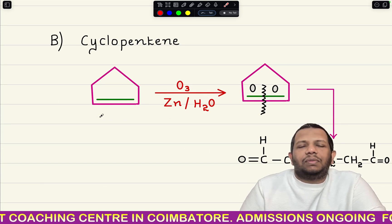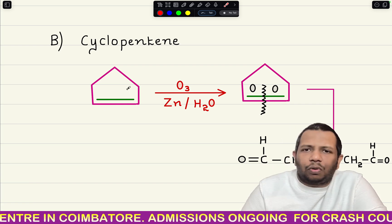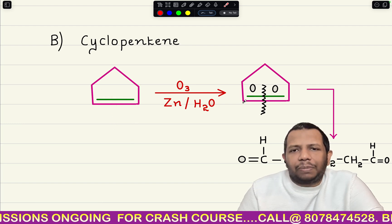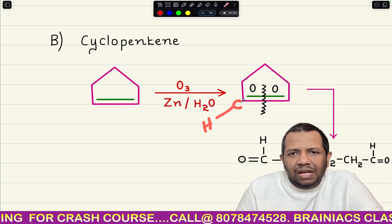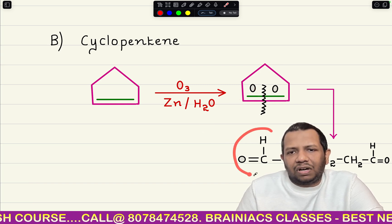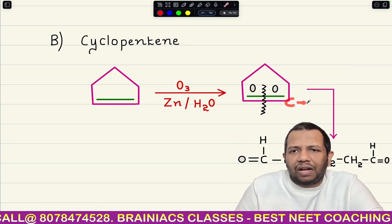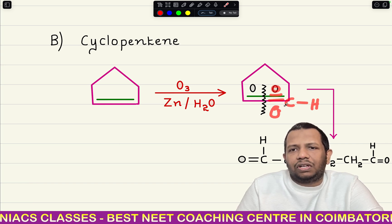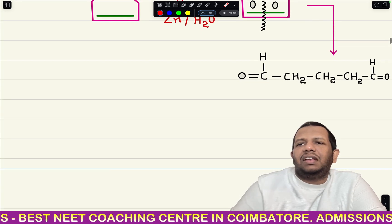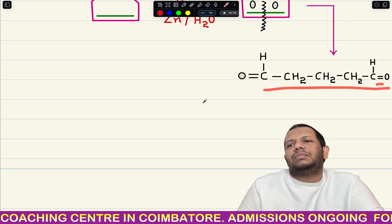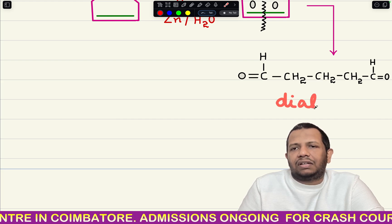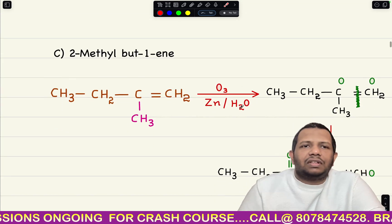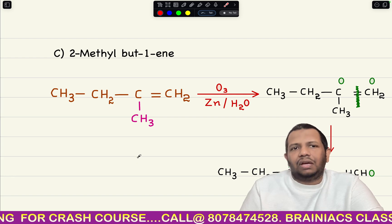For option B — cyclopentene — even for cyclic compounds, follow the same approach: break the double bond completely and put oxygen on both sides. You get a carbon atom with one hydrogen and a double-bonded oxygen on each side, giving CHO–CHO. This is a dialdehyde — two aldehyde groups connected — so this is also not acetone. Option B is incorrect.